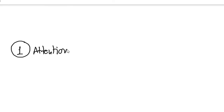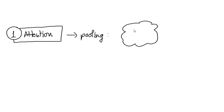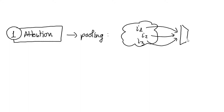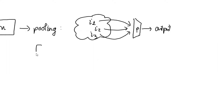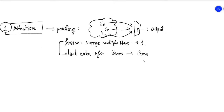From a very bare-bones perspective, you can think of attention as a pooling method, similar to sum pooling, max pooling, or average pooling, where you have multiple items and you want to combine them into a single output. Pooling is usually used in two ways: the first is fusion, where you want to merge multiple features into one; the second is where you have multiple items and you want them to absorb information from each other.